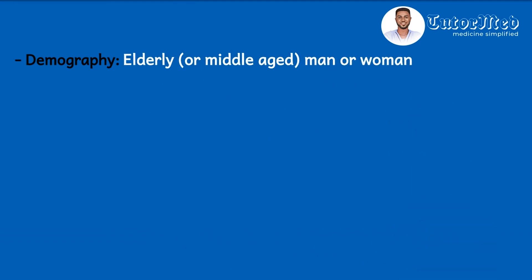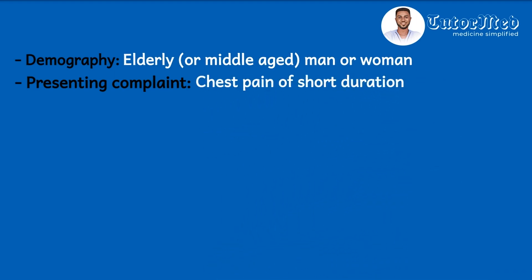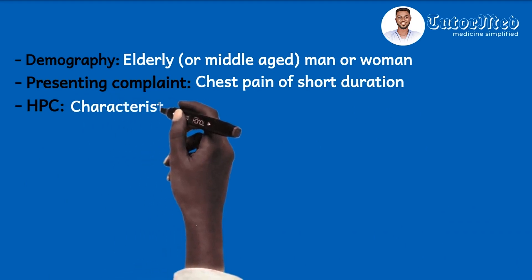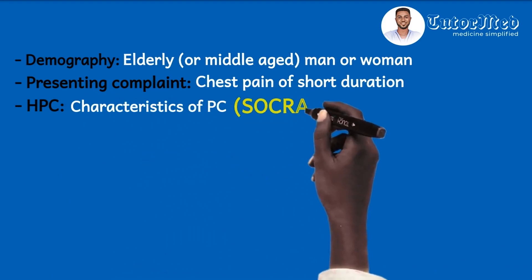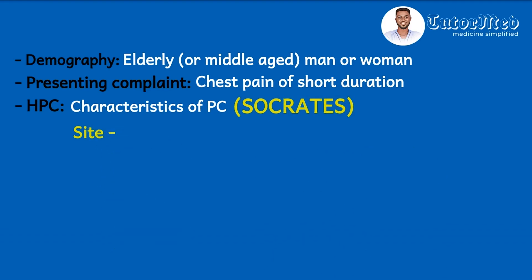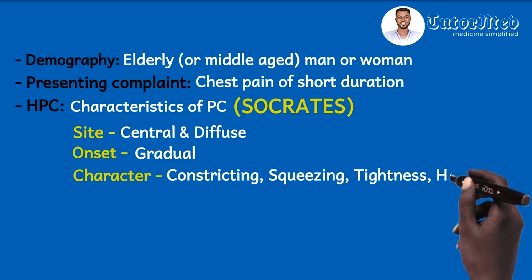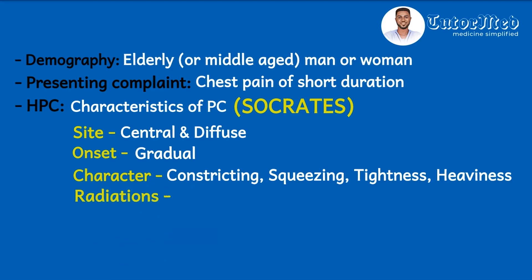For a typical history, you'll get an elderly or middle-aged patient, man or woman, presenting with chest pain of short duration. In the history of presenting complaint, we begin with the characteristics using SOCRATES. For the site, it is usually central and diffuse. The onset is gradual. The character is constricting, squeezing, tightness, or heaviness.